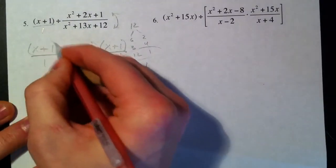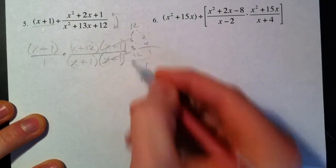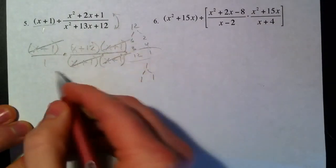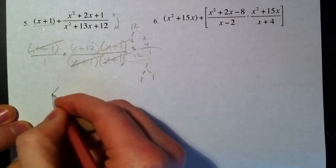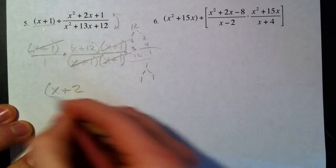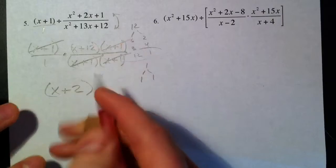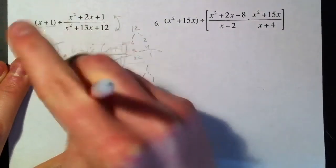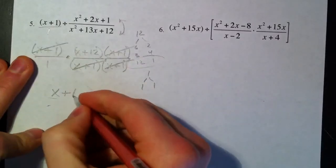And so what cancels out? We've got X plus 1 over X plus 1, we've got X plus 1 divided by X plus 1, and so X plus 12 is left all on its own. Sorry, we don't need parentheses there, so X plus 12.